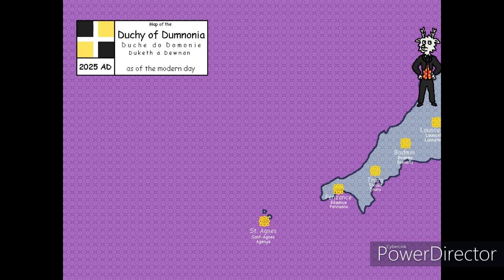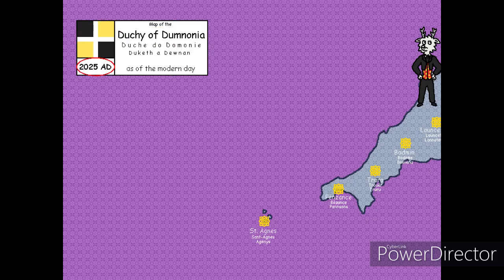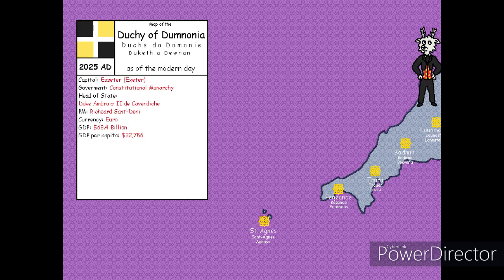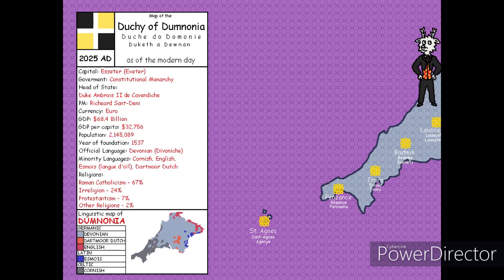Finally, you'll want to finish off with some information about the map. On a separate layer, create a box detailing what region or country you're showing, a bit about the timeline in question, or the date that the map is set to. If you're focusing on a certain country, you can add another box to type out information about the country, like its capital, government, economy, demography, and the like.